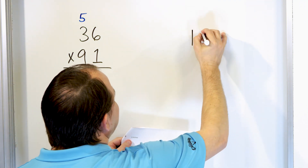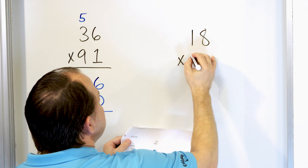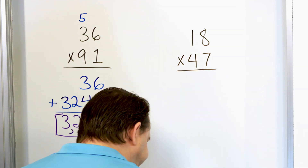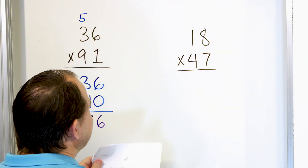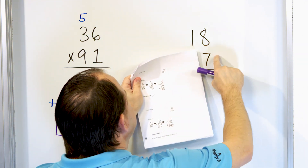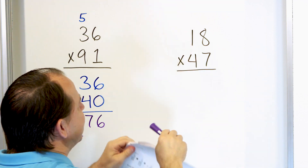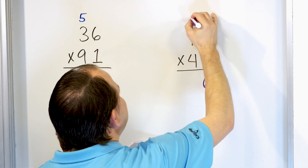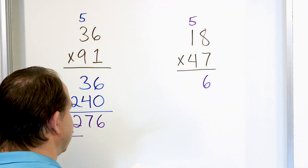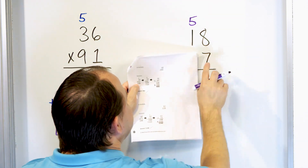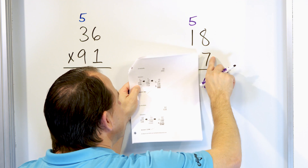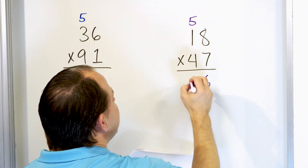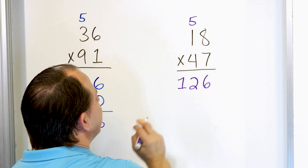Let's take a look at the next problem. We're going to do the number 18 and multiply that by 47. The first thing you do is completely pretend the four isn't there. Seven times eight is 56 — put a six here and carry that five to the next column. The four is not there, so one times seven is seven. Then seven plus five is 12, so we put the 12 there.